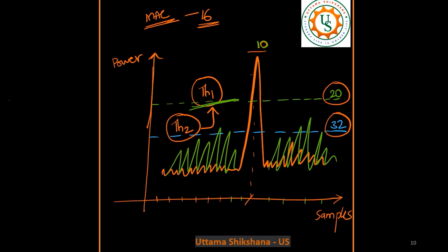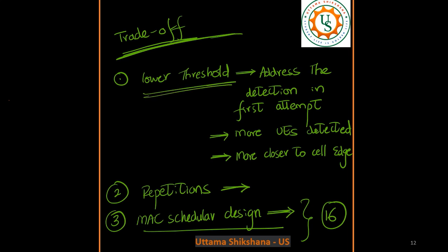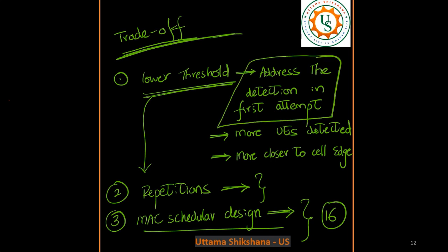So I think you've got clarity on how the MAC scheduler can influence the design of this threshold. There will be a trade-off in the system while designing this threshold value. Depending on the MAC scheduler design — say it considers 16 UEs — based on that you can have a relaxed threshold; it need not be as low as possible, it can be an optimal value. In such a case you can also go for fewer repetitions and choose different formats. That flexibility is given, but there will be a compromise on certain UEs not being addressed in the first attempt.